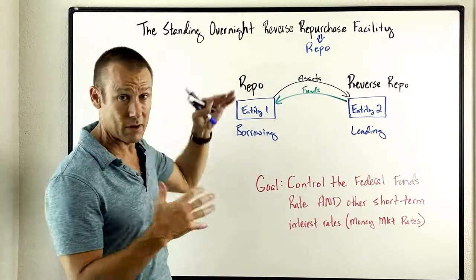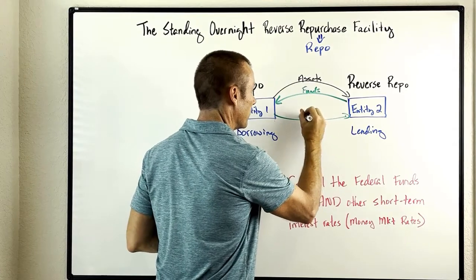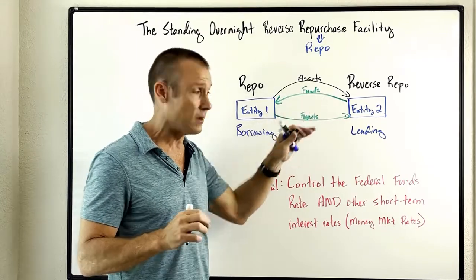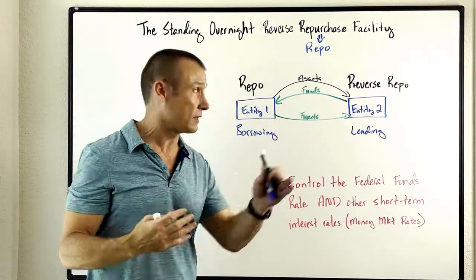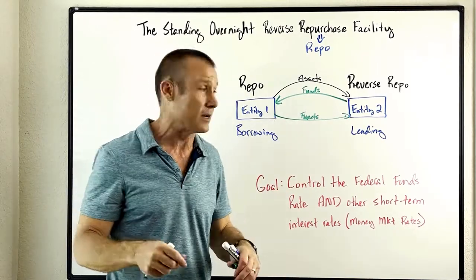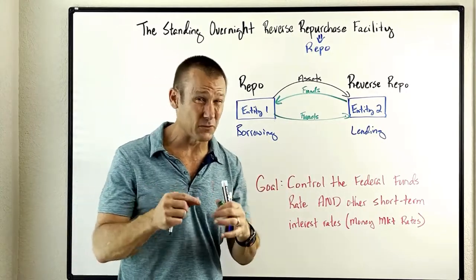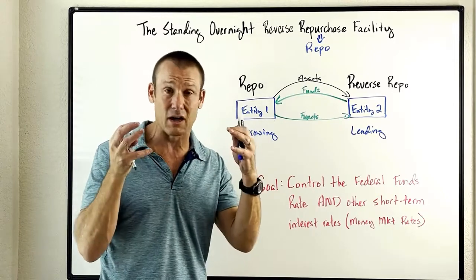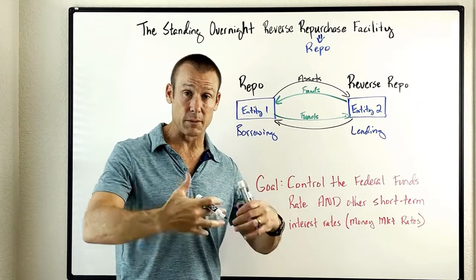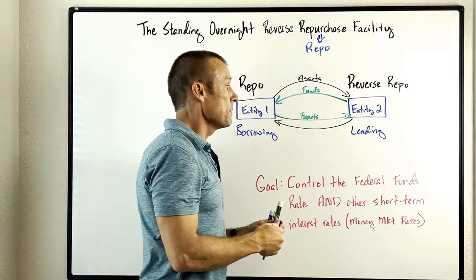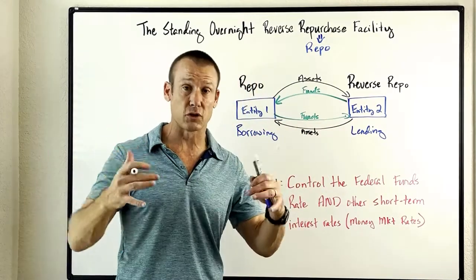Day two comes, and the borrowing entity has to pay back funds — slightly more than was originally borrowed. The difference between those two payments, divided by the original loan amount, gives you basically the interest rate. The payment is a little more than the original lending, and that's how the lending entity makes money. The difference is really small because this is a very secure, collateralized lending and borrowing situation. Entity two gives back the assets — super secure, keeping those interest rates down.